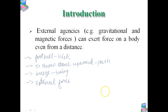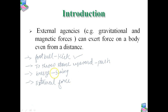In these examples, one thing is clear: the external agency of force is in contact with the object. In football, the foot and the football are in contact. When we throw a stone upward, the stone and the hand are in contact. Similarly, the breeze and the tree are in contact. However, it is not always required that the two objects must be in contact.